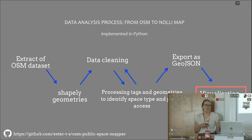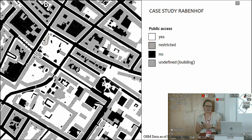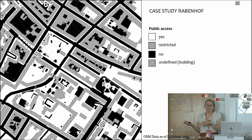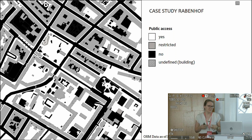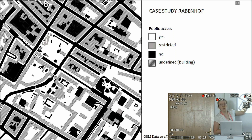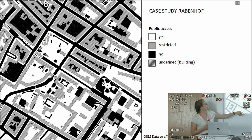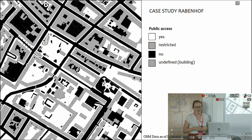Inspired by the historical Nolli map, here you can see the case study area Rabenhof with white areas showing public access, gray areas with restricted public access, black areas with no public access, and buildings with undefined public access. The color contrast between publicly accessible and non-accessible space is quite strong, similar to the original Nolli map. What's interesting in this case study is that there's quite a bit of publicly accessible space within courtyards, because of the many building passages in these typical communal housing units in Vienna — so the courtyards offer public space to the neighborhood.